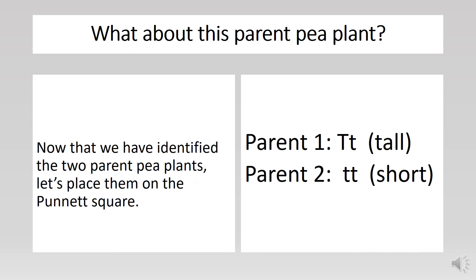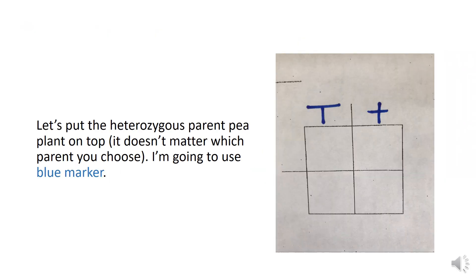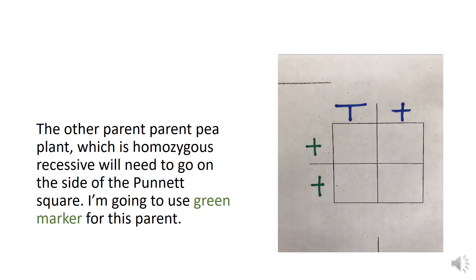Now that we've identified the two parent pea plants, let's place them on the Punnett square. Let's put the heterozygous parent pea plant on top. I'm going to use blue marker to represent this parent. The other parent pea plant, which is homozygous recessive, will need to go on the side of the Punnett square. I'm going to use green marker to represent this parent.